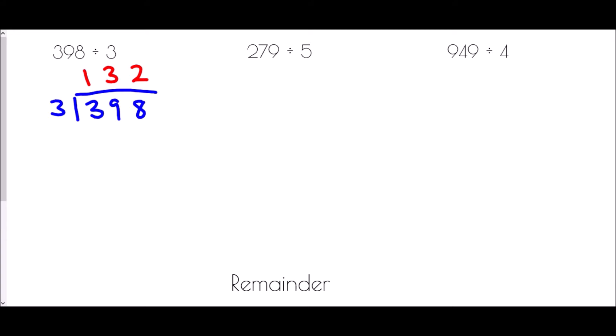So how do we deal with this? Well, the other option is we can just write a little r for remainder and 2. So 398 divided by 3 is 132 remainder 2.